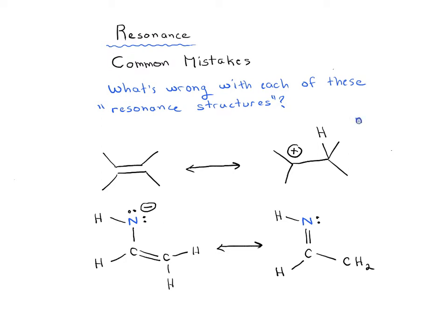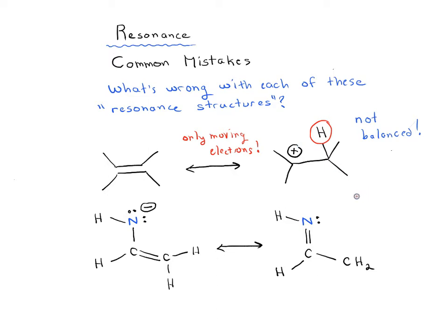Let's go through this top one. We've got an alkene that's supposedly in resonance with this product here. What's wrong with the one on the right? Why is this not actually a resonance structure? Notice that this is not a balanced equation — we have a different number of atoms. This hydrogen here has been added out of nowhere. Remember, in resonance we're only moving electrons; we're not adding or subtracting any atoms.